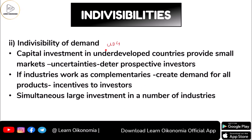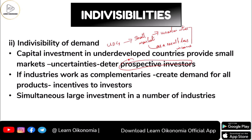The second indivisibility is indivisibility of demand, which concerns capital investment. In underdeveloped economies, markets are very small. Small markets result from low income in these economies and lead to uncertainties, which act as a disincentive for prospective investors. Investors think: why should I make a huge investment in production when the market is so small? Even if I produce a lot, it will create a market glut situation, leaving all my products unsold and causing a loss.